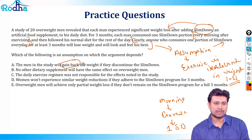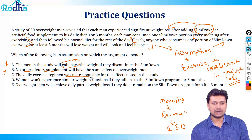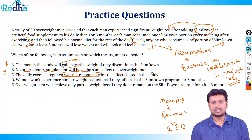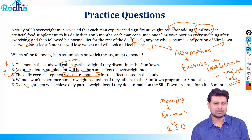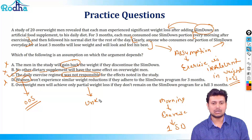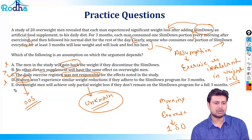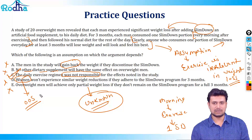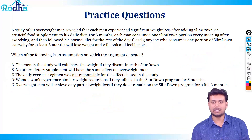Looking at options: Option A — the men will gain back weight, you don't know, gone. Option B — no other dietary supplement will have the same effect, not relevant. Option C — the daily exercise was not responsible for the effects noted — that's exactly what we're figuring out; only if you assume this will you then say that taking one portion of Slim Down helps you lose weight. Options D and E are out of scope or unknown. The answer is C.